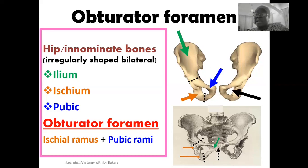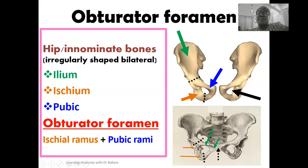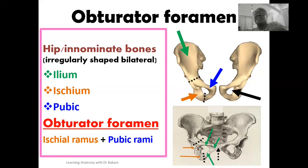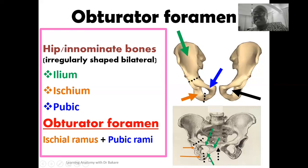Driving further along the body of the pubic bone, you see a superior extension from the body and an inferior extension. The superior extension, highlighted in green, is referred to as the superior pubic ramus. The inferior extension, also highlighted in green, is referred to as the inferior pubic ramus. So we have superior and inferior rami extending from the body of the pubic bone.